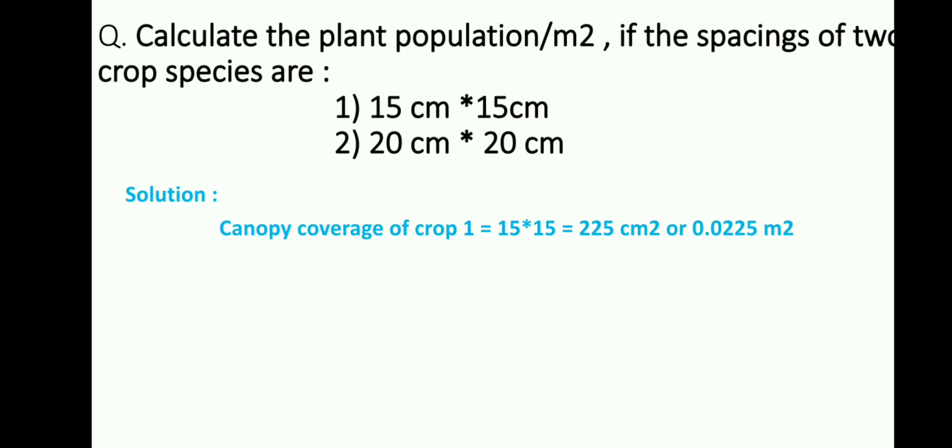This estimates that a single plant covers 225 cm square of the total land, means the total plants in 225 cm square is one plant, or we can say that one plant takes 225 cm square out of the total land area.